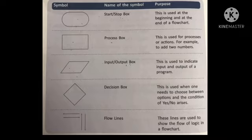Fourth one is a decision box, it is a diamond symbol. When you have to choose between two options, you indicate it by a diamond symbol. And the last one is flow lines. Flow lines are directional arrows and they show the flow of logic in any flow chart.